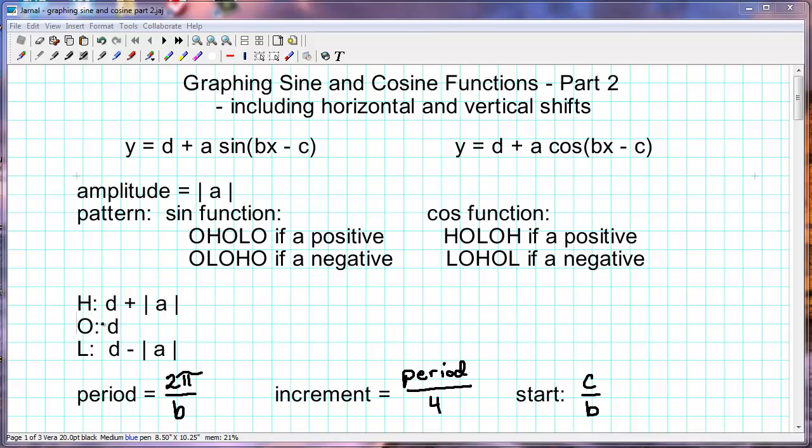Instead of the x-axis being our midline, now our midline will be at the line y equals d. So whatever d is, that will be shifted up or down that number of units. And then to get our high and low, we have to add our amplitude and subtract our amplitude from that midline.